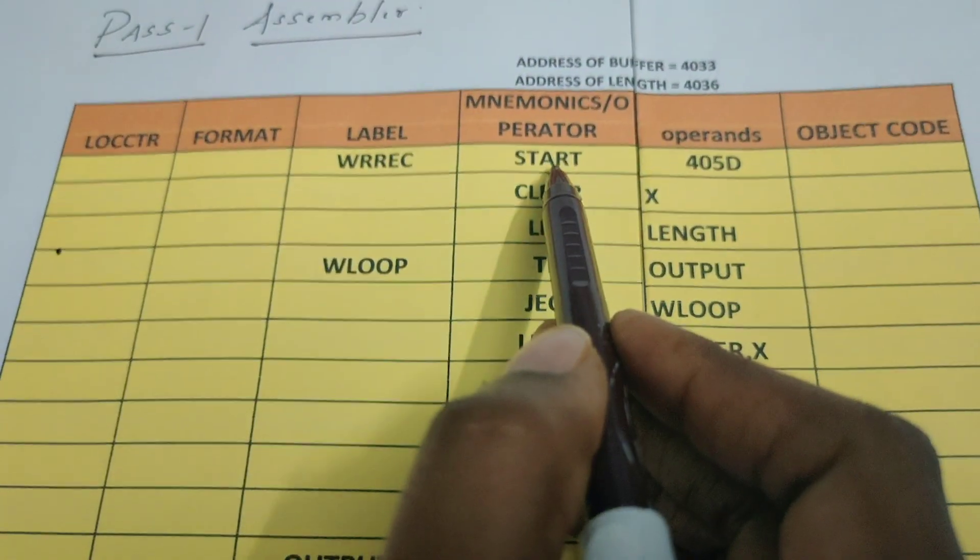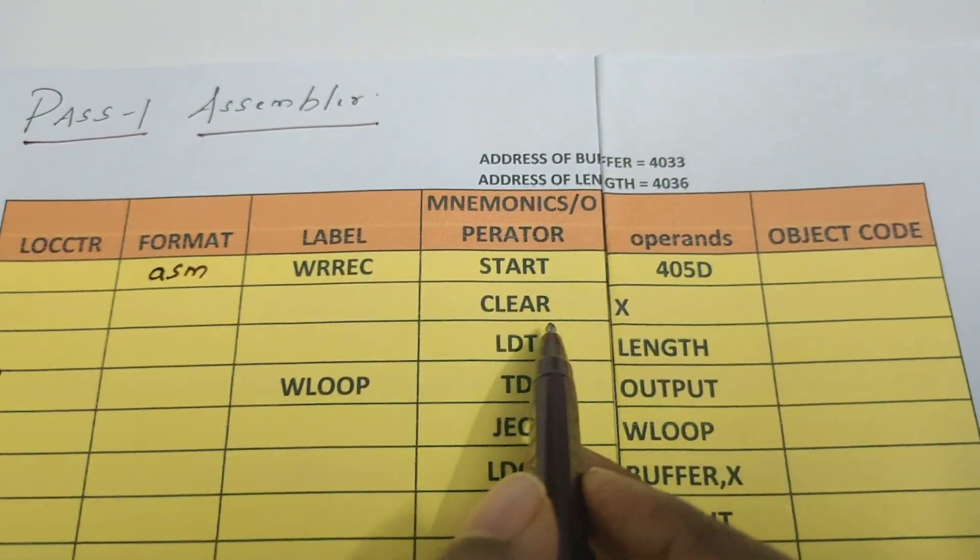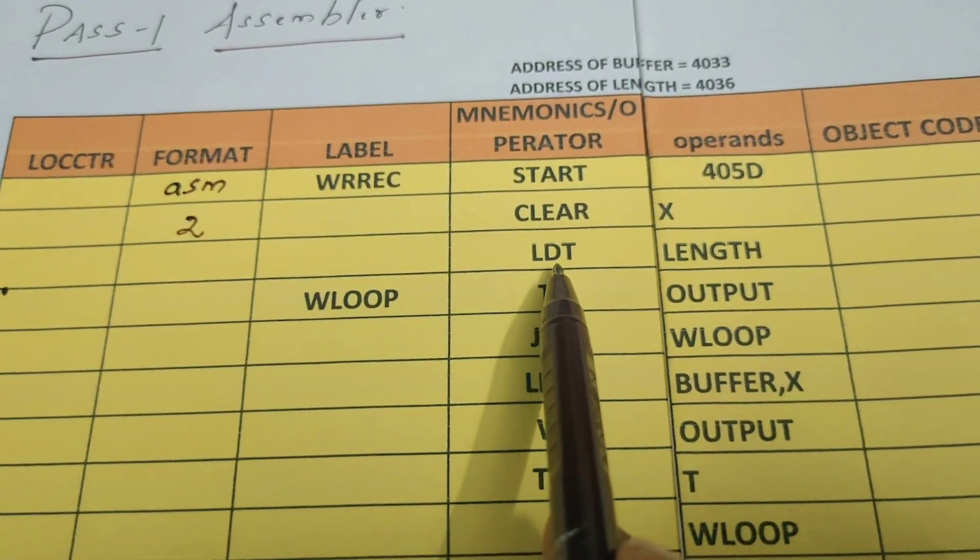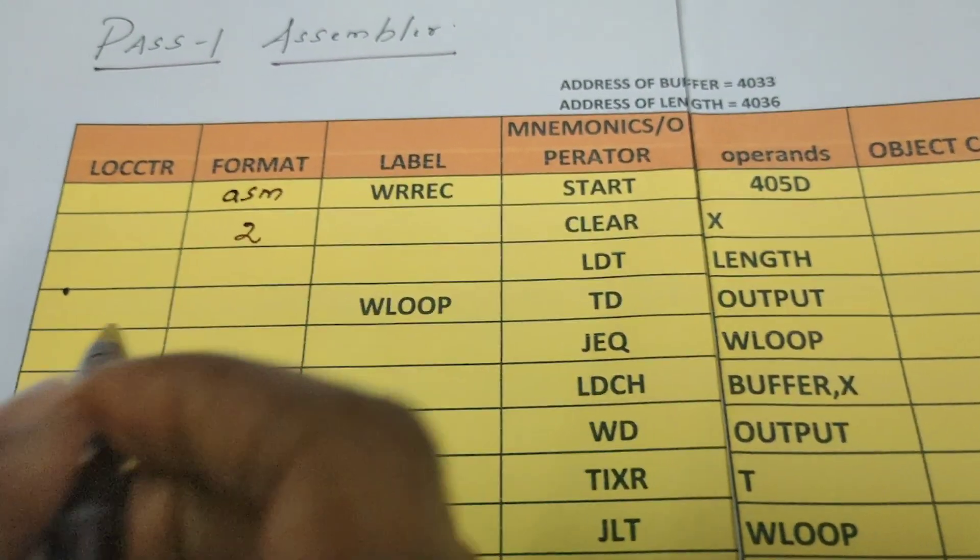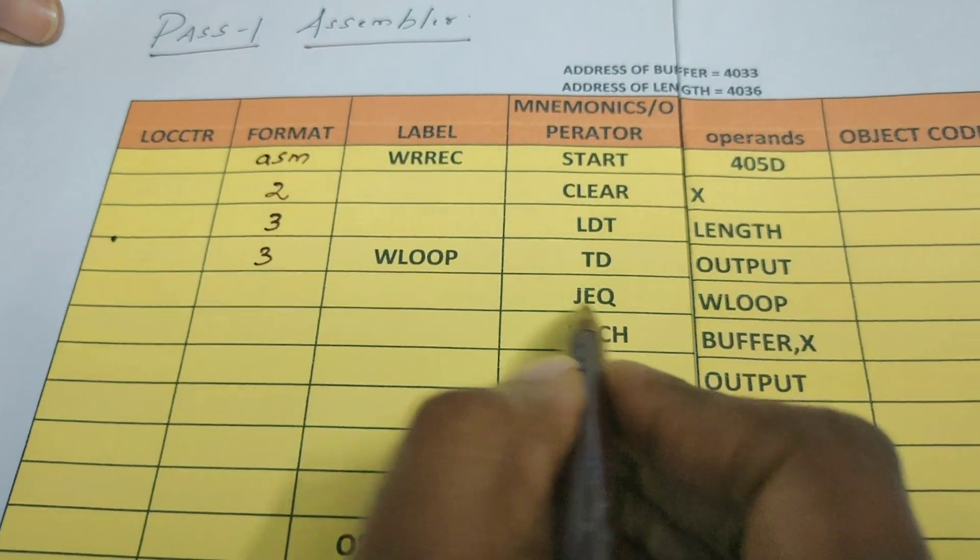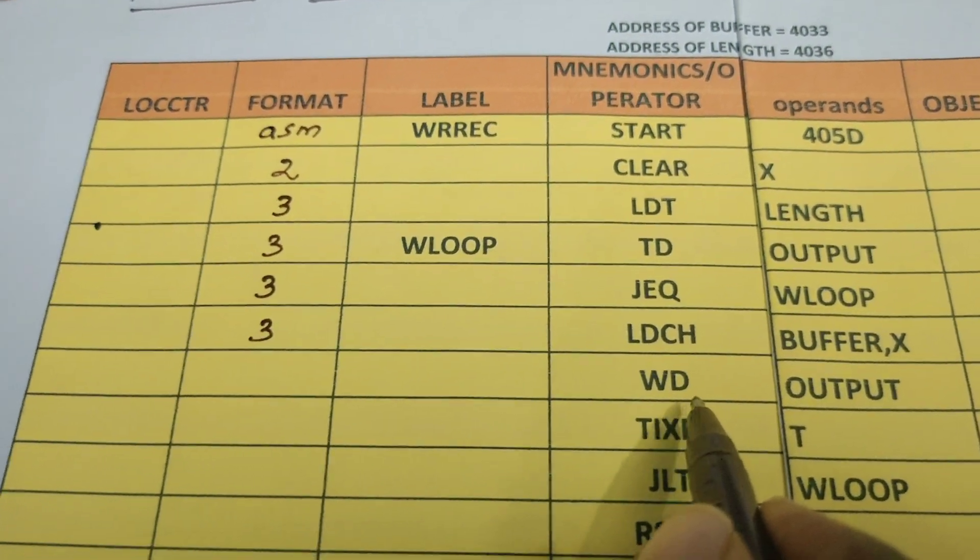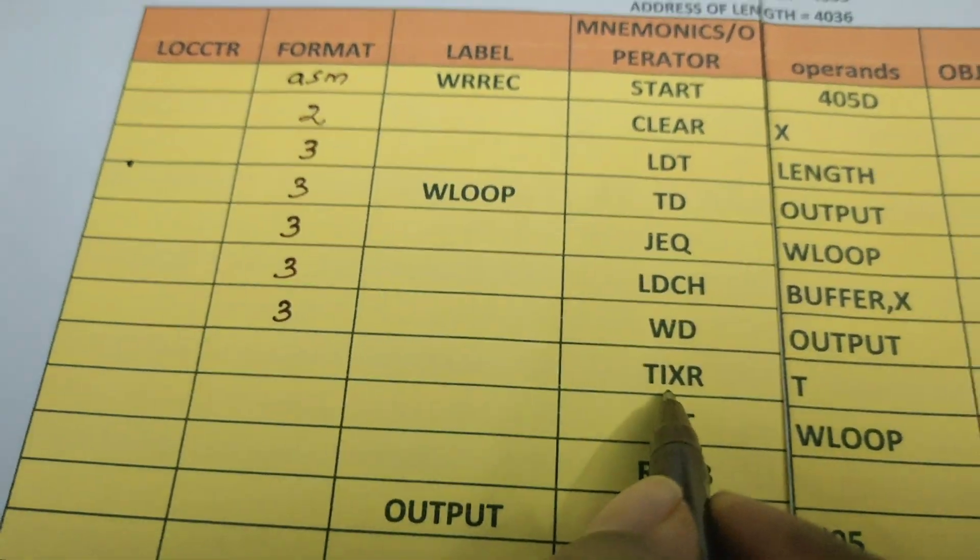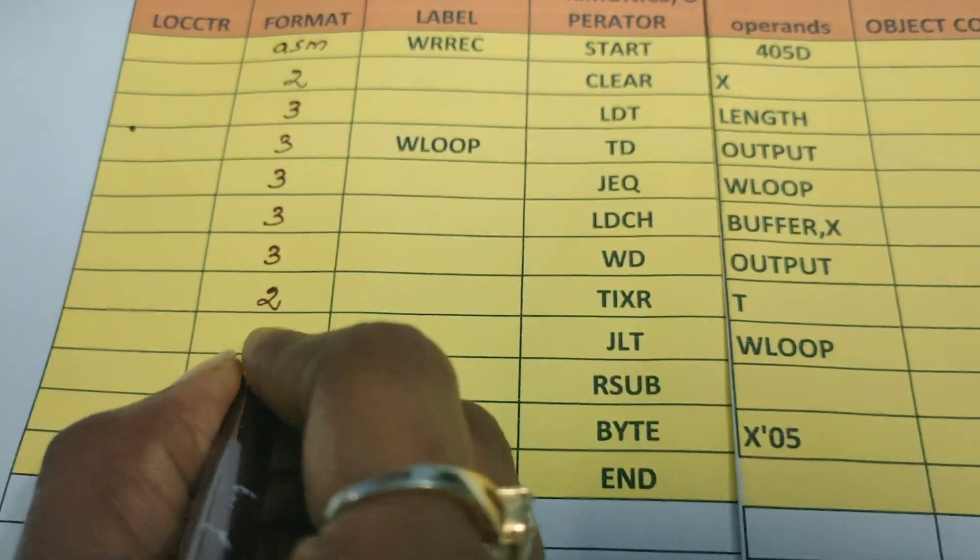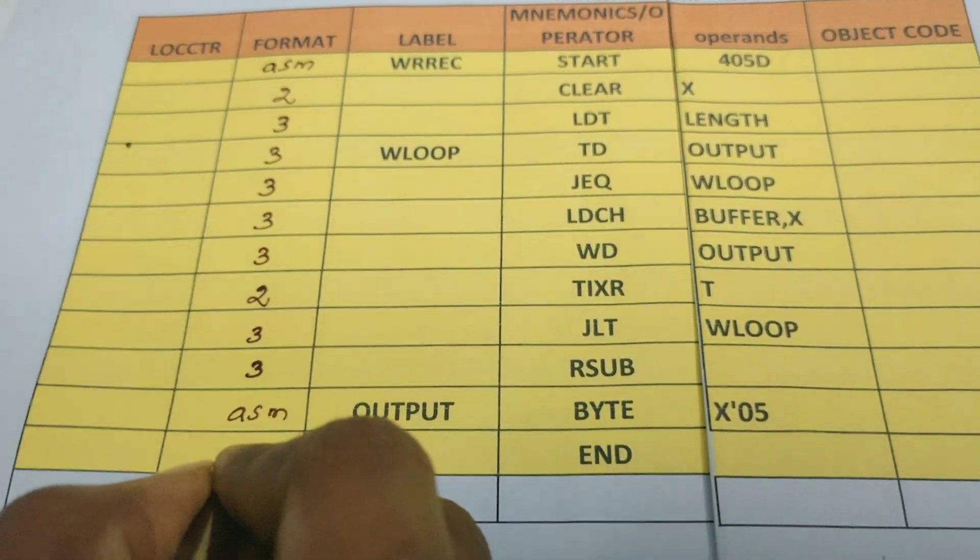START is an assembler directive, so let me write here ASM. CLEAR is a SIC/XE instruction, but it is format 2, format 2 means its length is 2 bytes. LDT is also a SIC/XE instruction, it belongs to format 3, so its length is 3. TD format is also 3, JEQ format is also 3, LDCH format is 3, WD means write data, its format is also 3. But TIXR test and increment register, it belongs to format 2 so its length is 2 bytes. JLT is 3 bytes, RSUB is also 3 bytes. BYTE is an assembler directive and END is also an assembler directive.